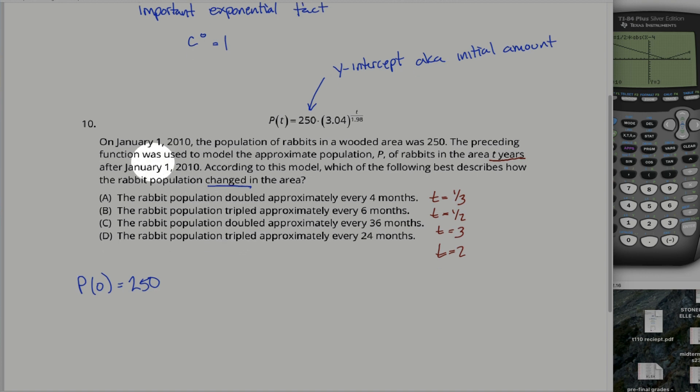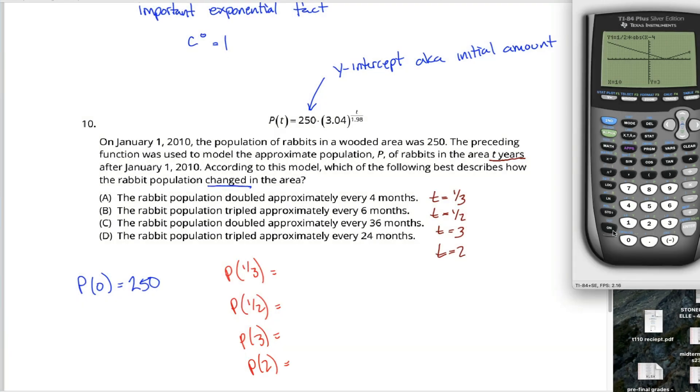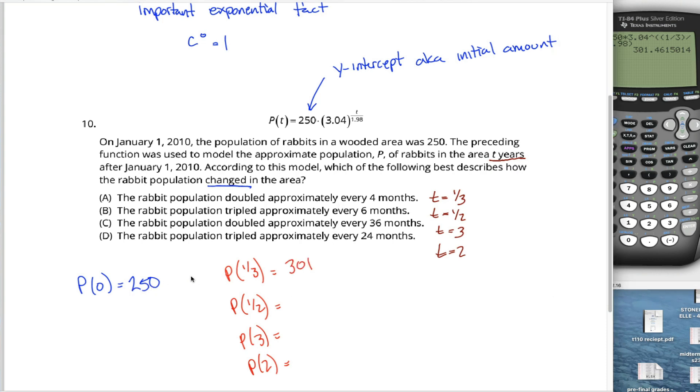Anyways, if we didn't want to think too deeply about this, we could just pull out a calculator and calculate p of one-third, p of one-half, p of three, and p of two. I'm actually going to go ahead and do that because there's a couple tricks you can do to sort of shortcut things. You could type in 250 times 3.04 raised up to some power. That power has one-third up on the top of the fraction, and it's got 1.98 down on the bottom. Hit enter, and it spits out a number, 301, give or take. Our population started out at 250, and after four months, one-third of a year, it's up to 301. Did it just double? Hell no, it didn't, so that ain't the right answer.